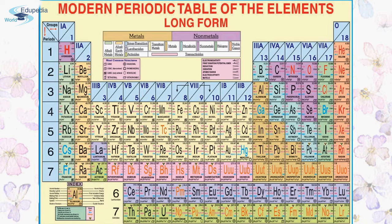When we talk about variation across periods — moving from left to right — density tends to increase from left to right, reaching a maximum in the middle, then decreasing toward the right. Starting from hydrogen and going across, density slowly climbs up, then significantly declines when it reaches the lighter gases such as nitrogen, oxygen, fluorine, and neon. It first keeps increasing, then starts decreasing toward the noble gases.